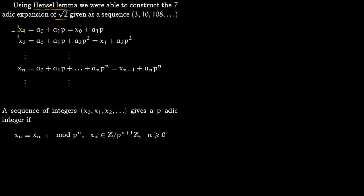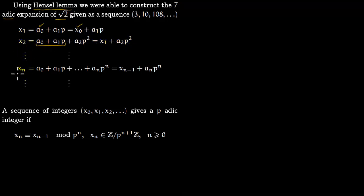In the general case, the process is like this: you have x₁ written as a₀ plus a₁p, where instead of a₀ you write x₀. Then x₂ was a₀ plus a₁p plus a₂p², but the first part is exactly x₁, so you have x₁ plus a₂p². Inductively, xₙ equals a₀ plus a₁p all the way to aₙ₋₁pⁿ⁻¹, which you can write as xₙ₋₁ plus aₙpⁿ.